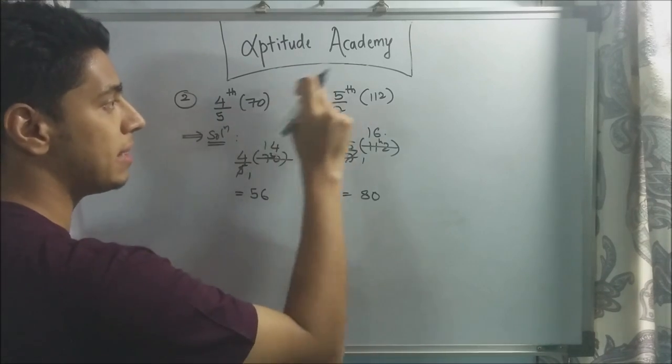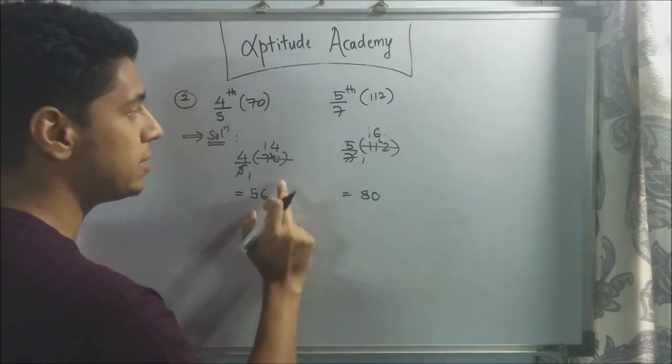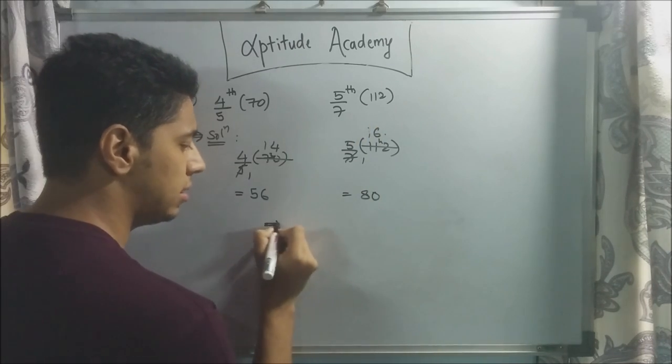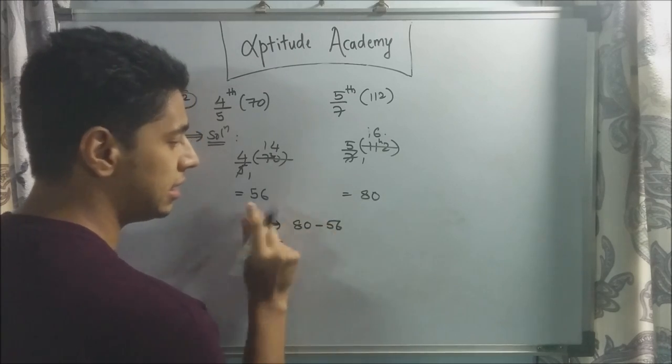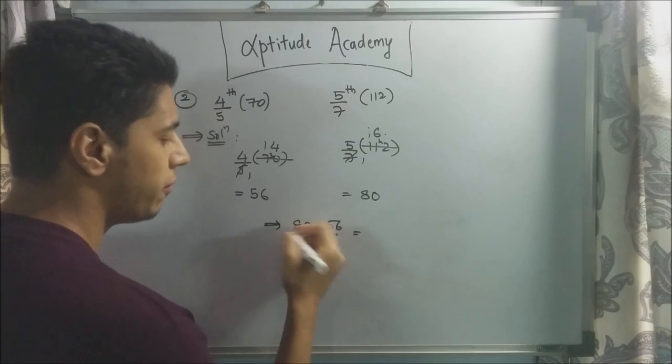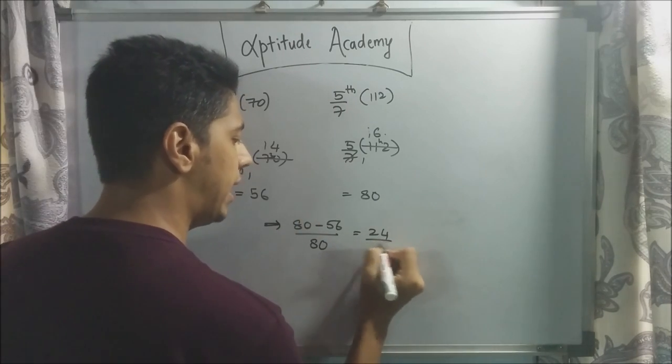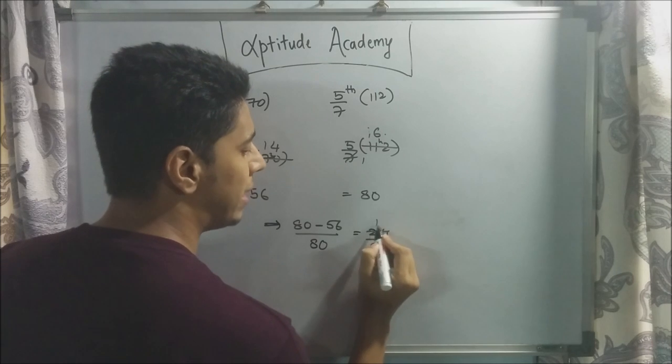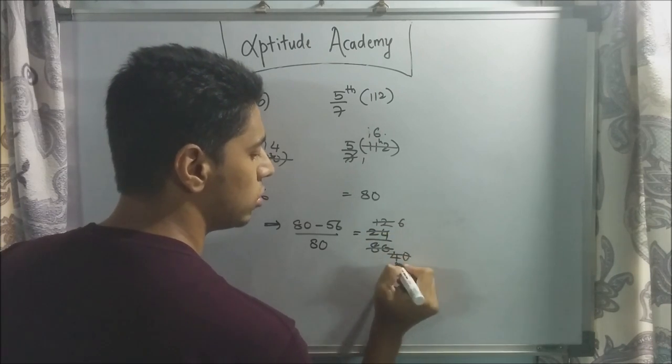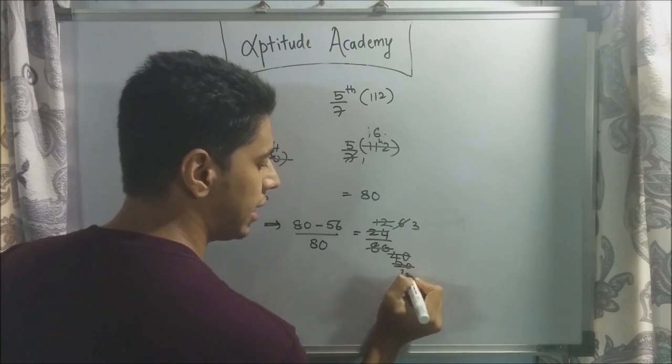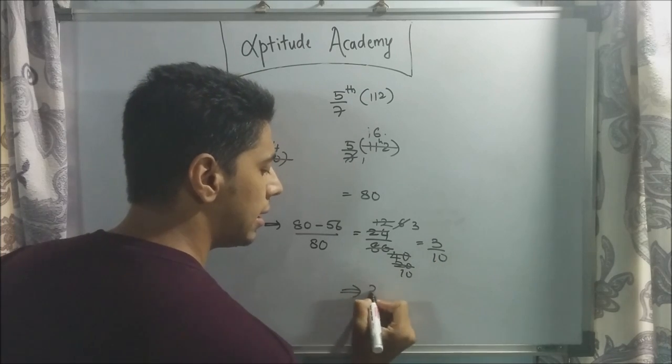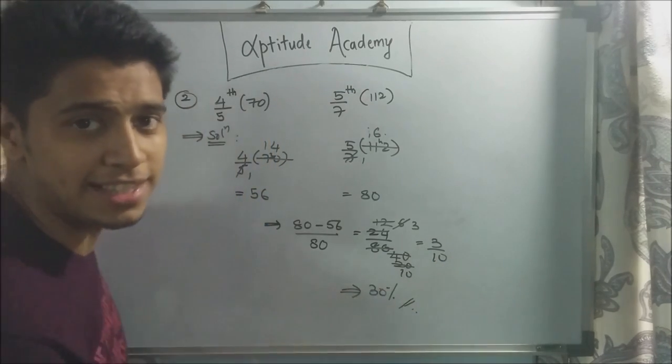To find by how much percent is this smaller than this, we have to find the difference and divide it by the bigger number. So it will become, the answer will be 80 minus 56, that's the difference divided by the bigger number, 80. If you find this, 80 minus 56 is 24. 24 by 80. 2 times 12, 2 times 40, 2 times 6, 2 times 20. 3/10. So 3/10, or 30%. This is your answer.